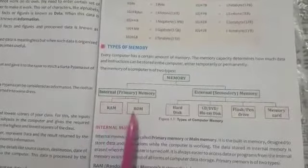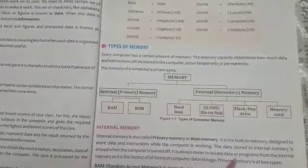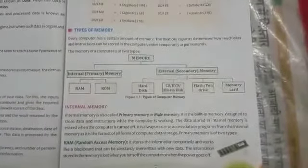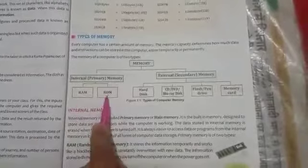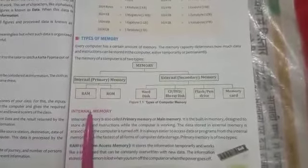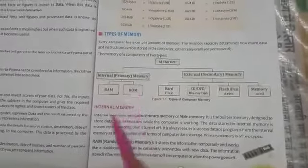Internal memory has two parts: RAM and ROM. RAM means random access memory and ROM means read only memory. So we have two parts of the internal memory: RAM which is random access memory and ROM which is read only memory.